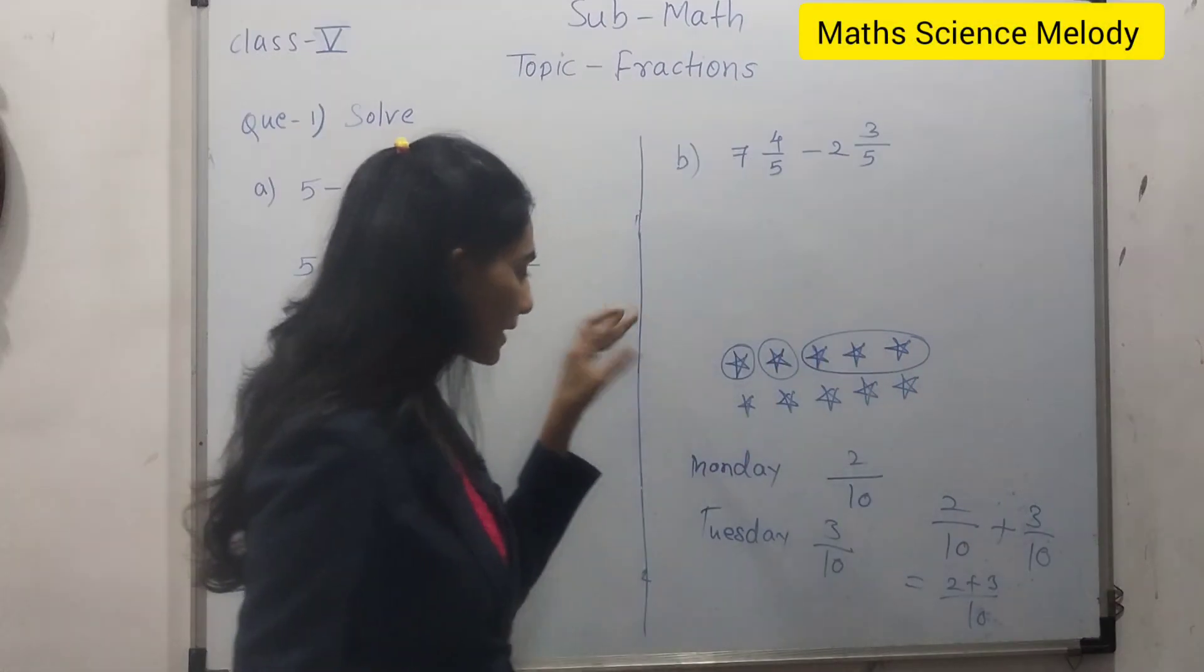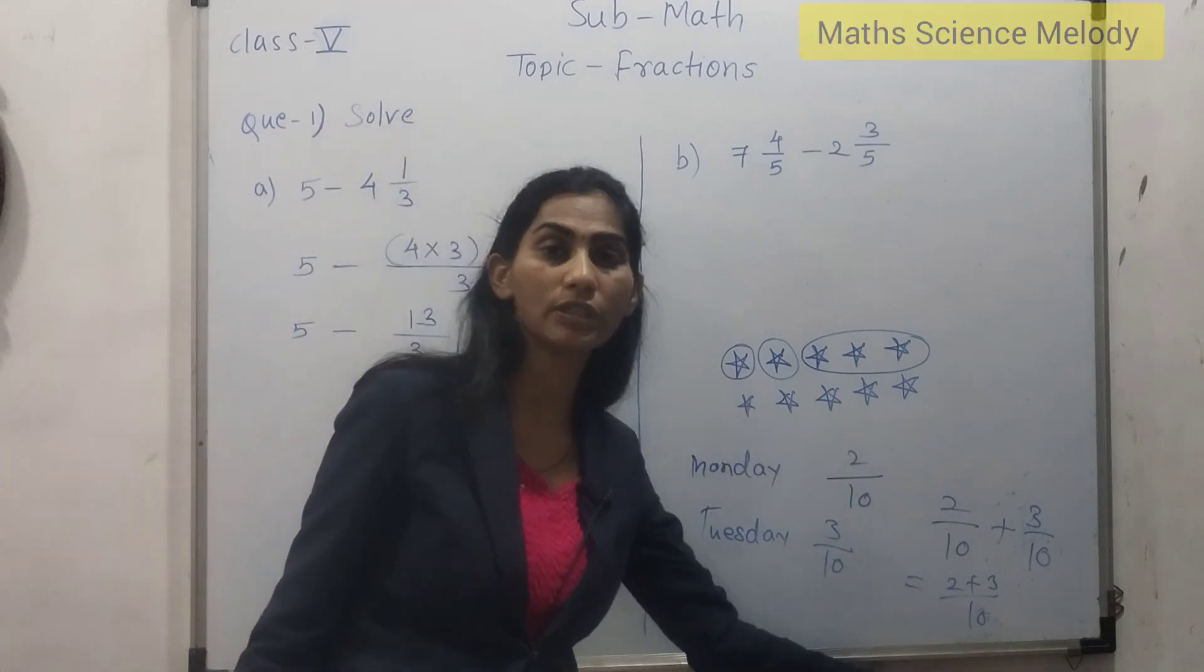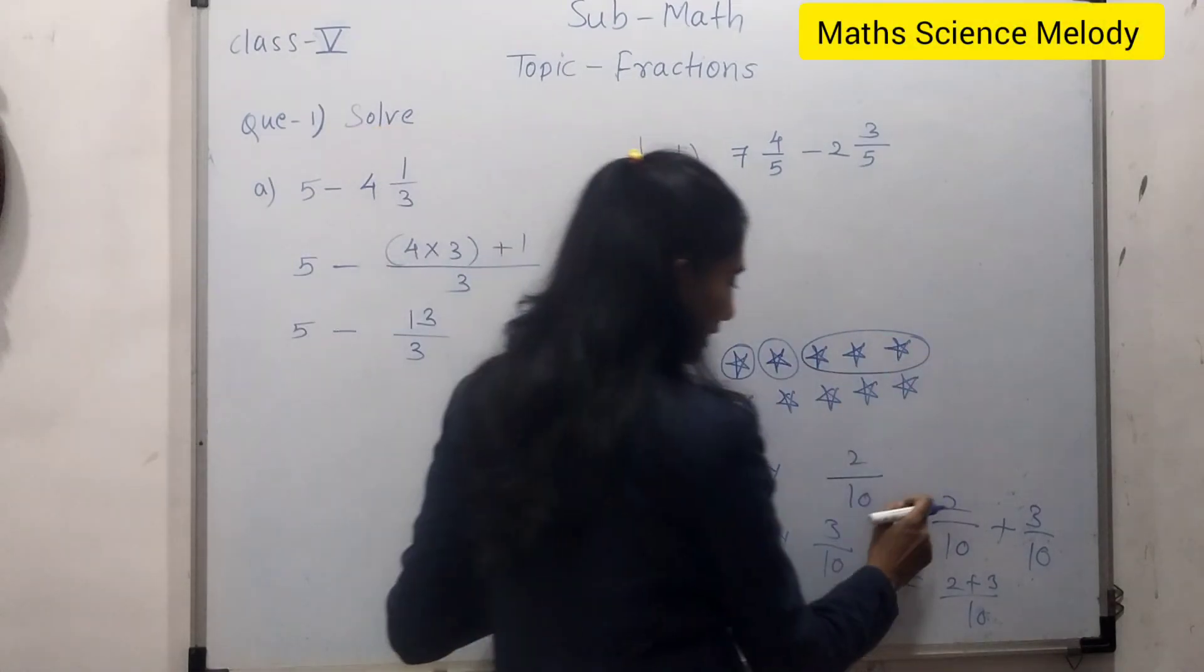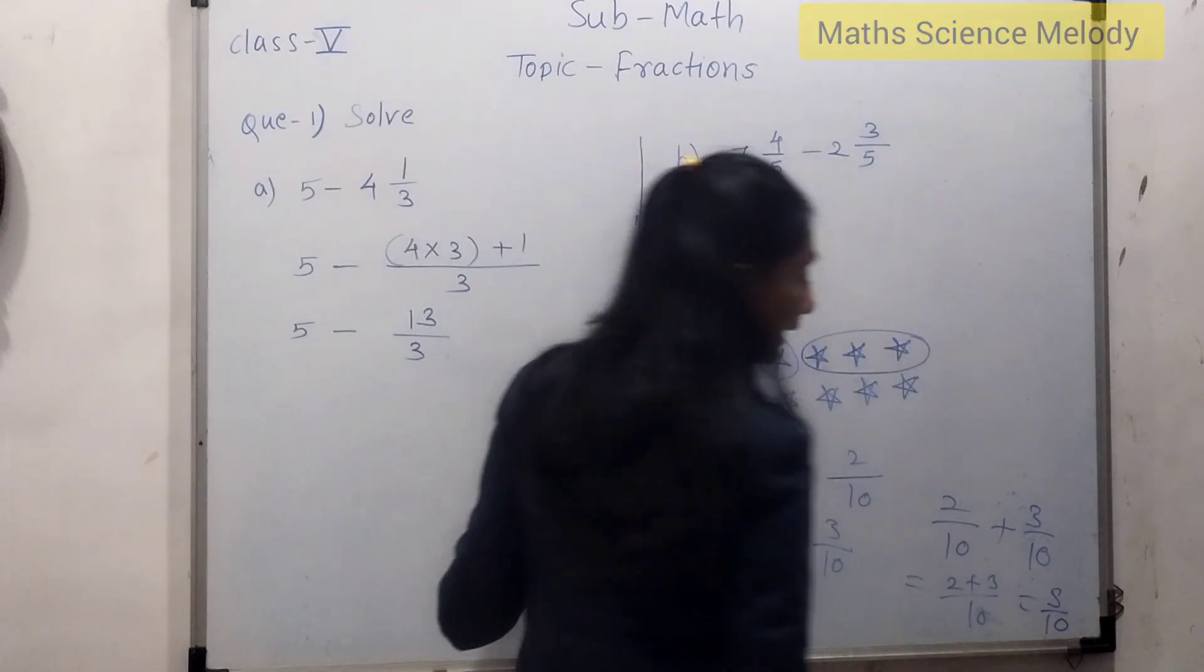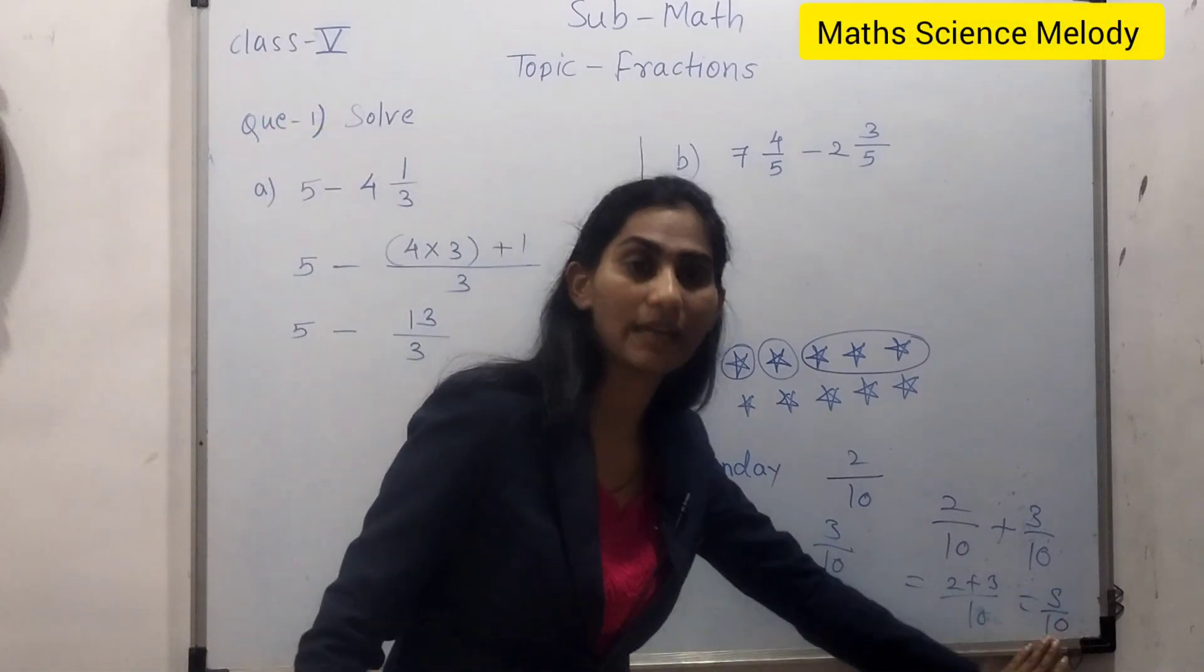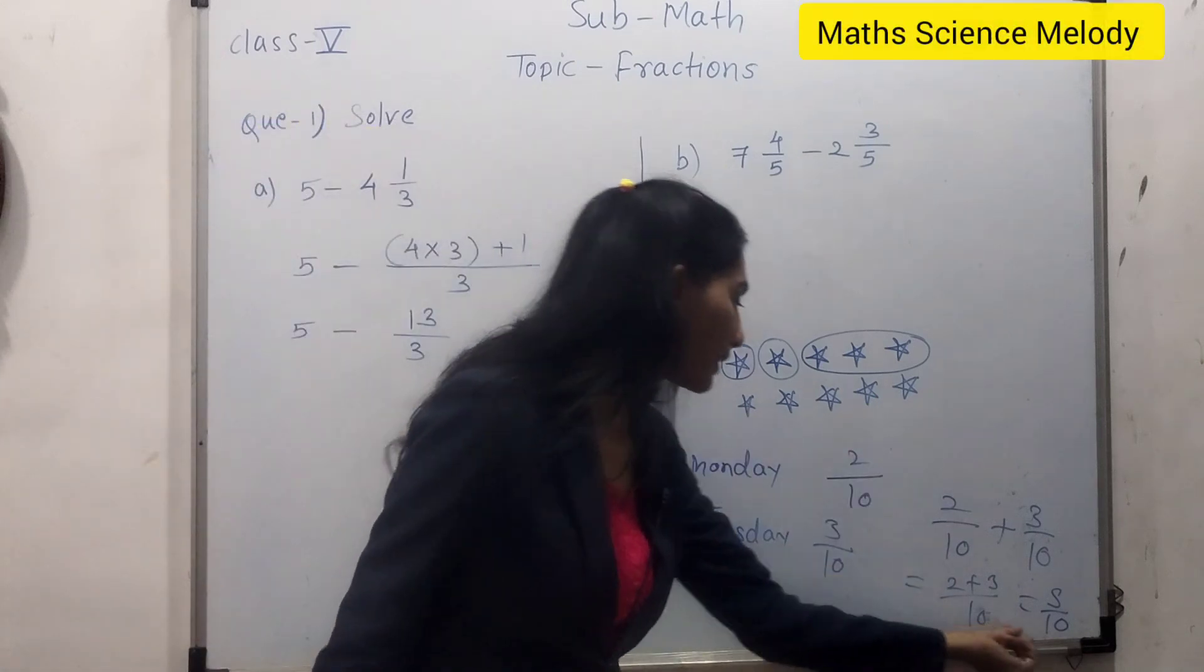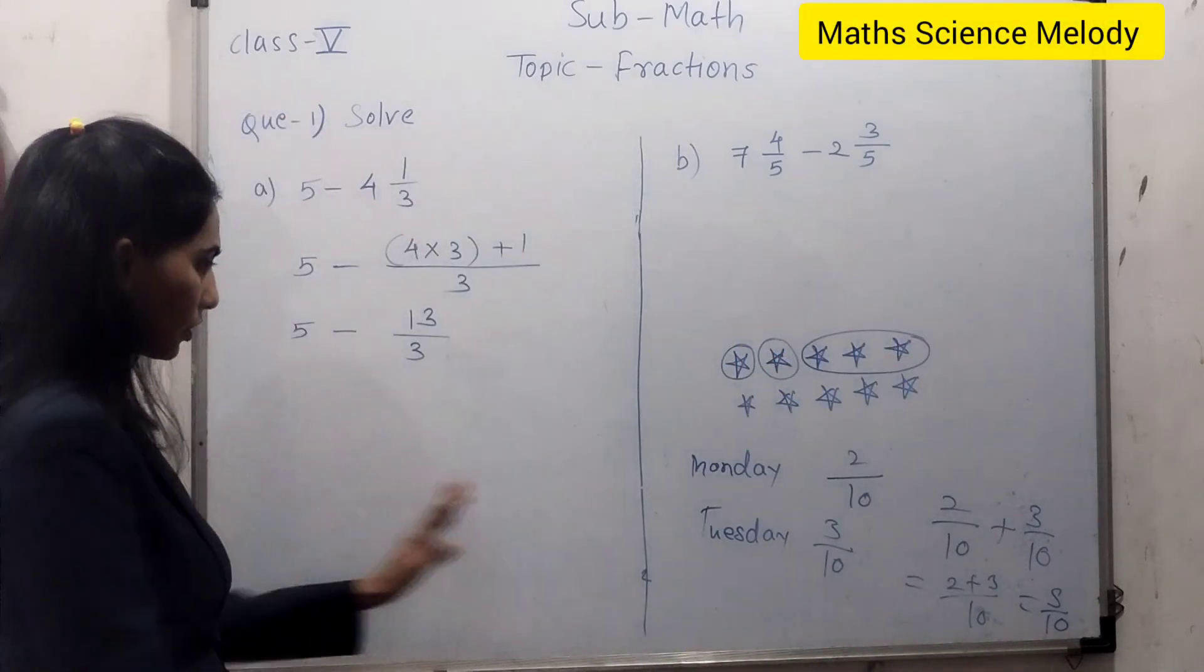This collection we represent by using the denominator. And how many parts we are considering, we represent by using the numerator. So this way I have used 5 stars out of 10 stars. That's why we do not add the denominators, because denominator tells us the total number of parts. We are not going to add the number of parts. Do not add the denominators. I hope you understood this concept.